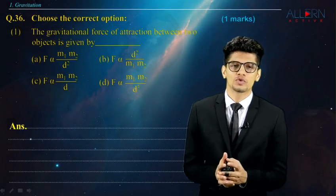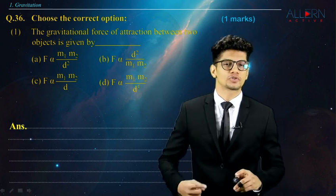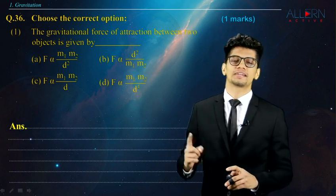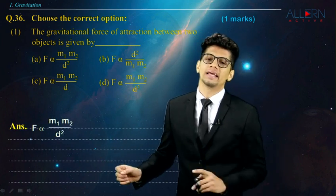We know that gravitational force is directly proportional to the product of their masses and inversely proportional to the square of the distance between their centers. That means the correct option is F alpha m1 into m2 upon d square.